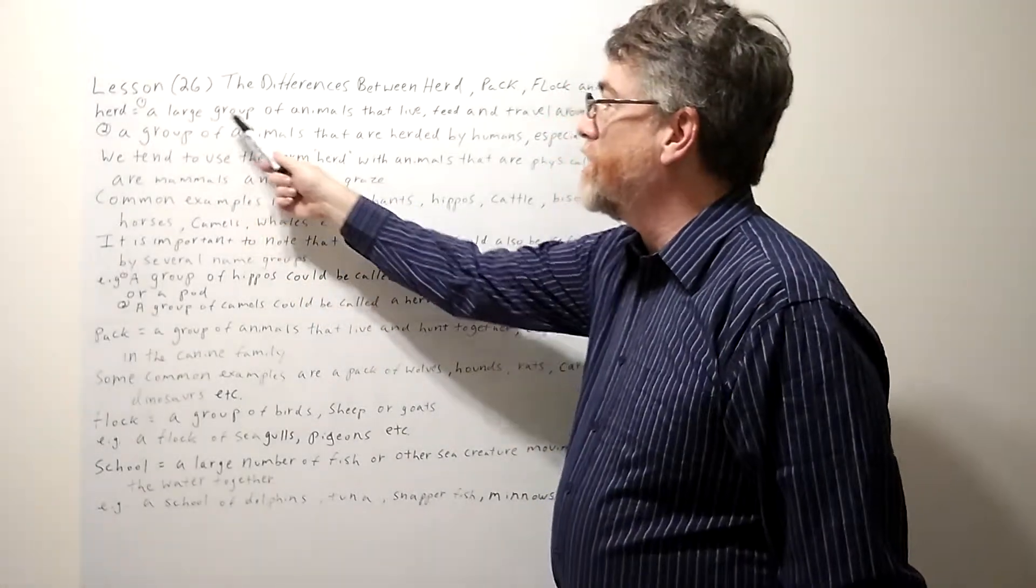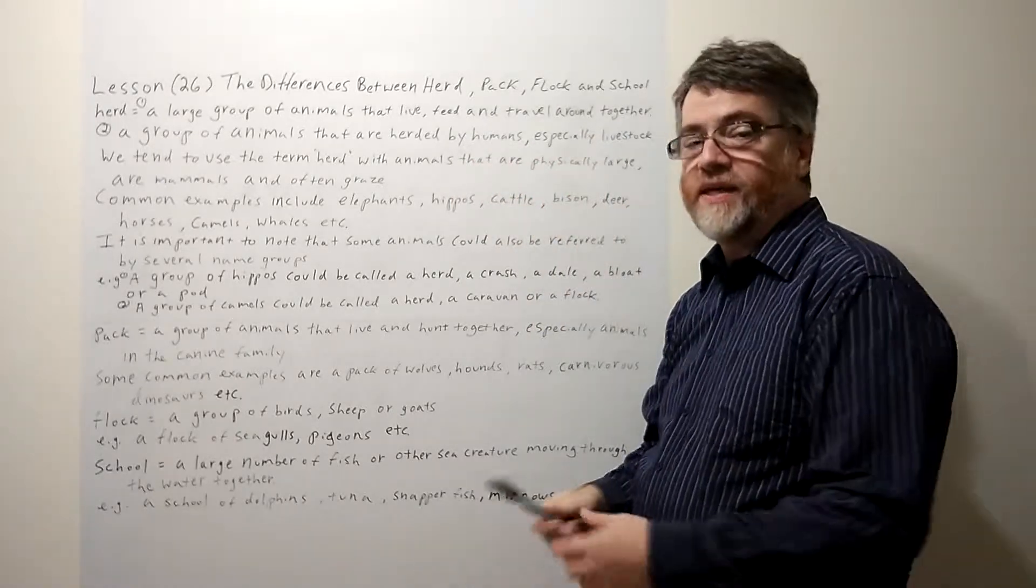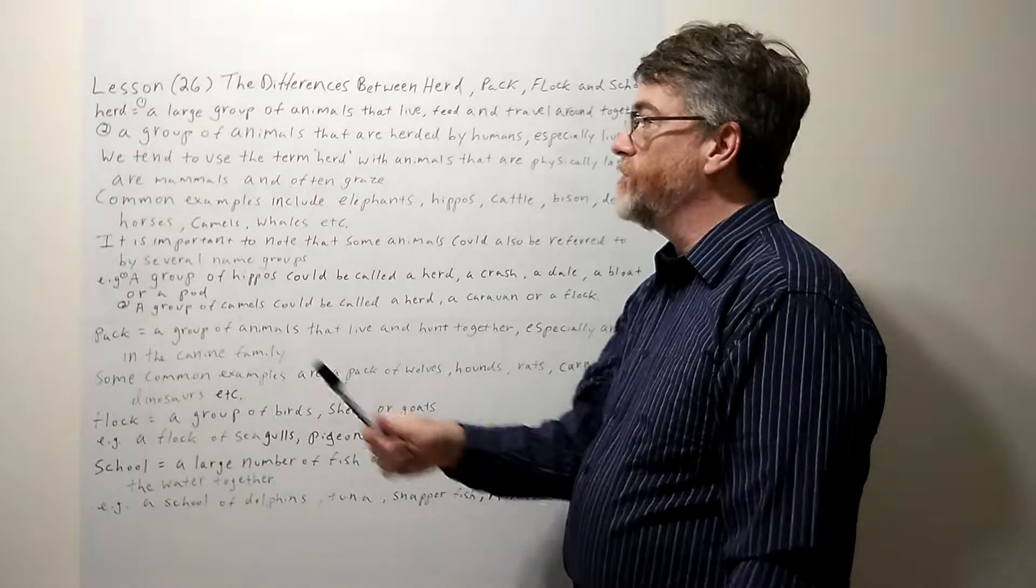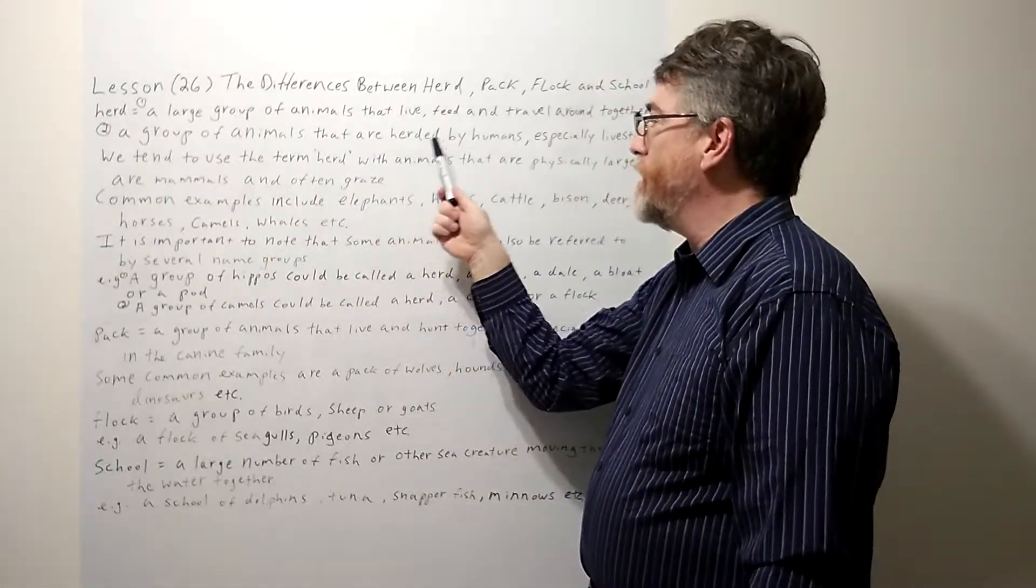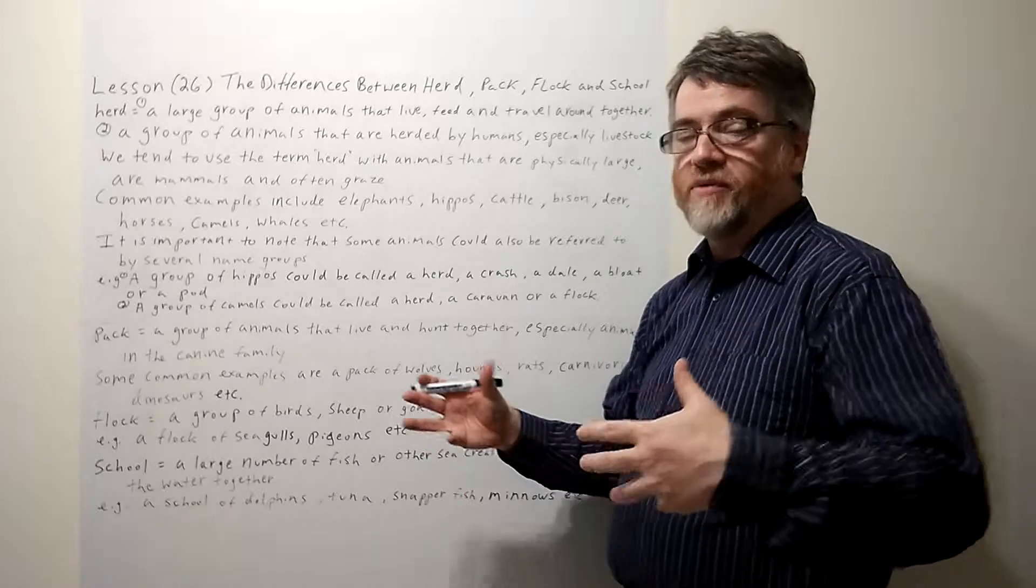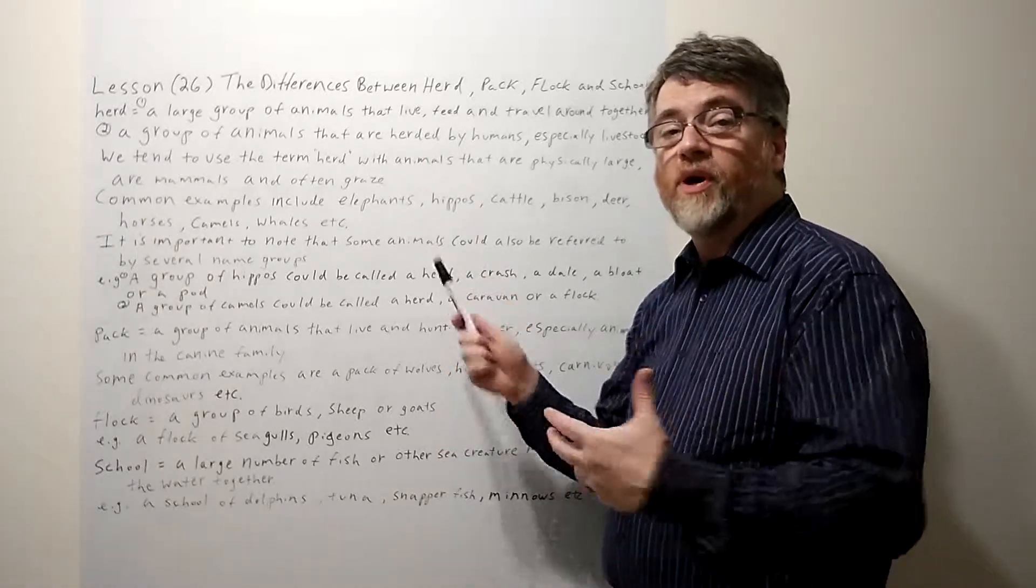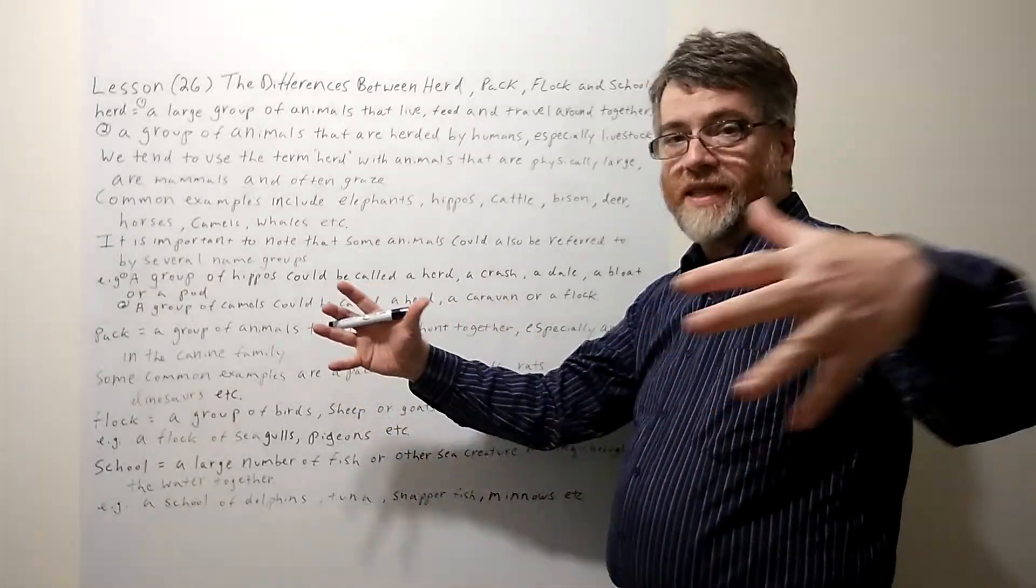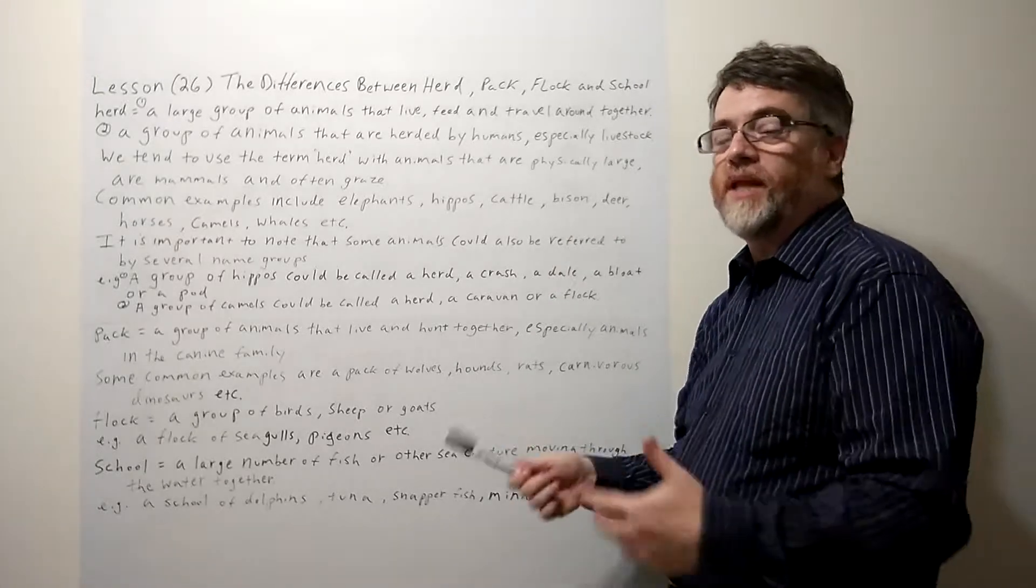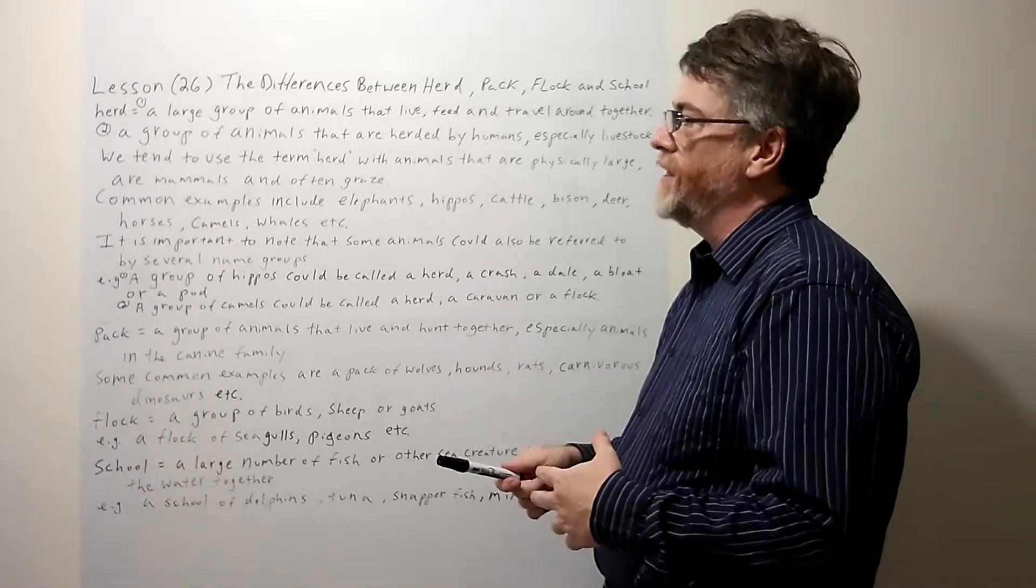Herd: a large group of animals that live, feed, and travel around together. Also, a group of animals that are herded by humans, especially like on a farm or livestock, especially cattle or any animals in the cow family, or buffalo, cows, bulls, but it even includes sheep and horses. Remember, to herd means that they gathered them together in a group.